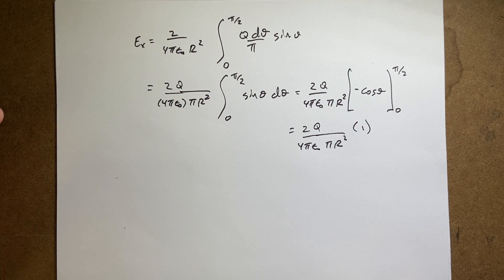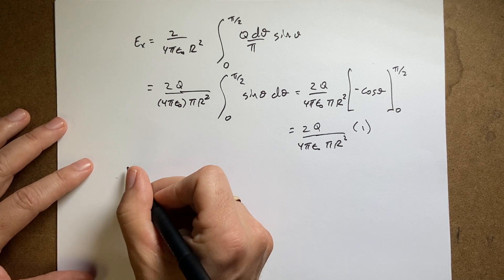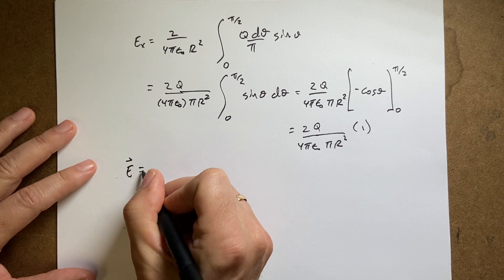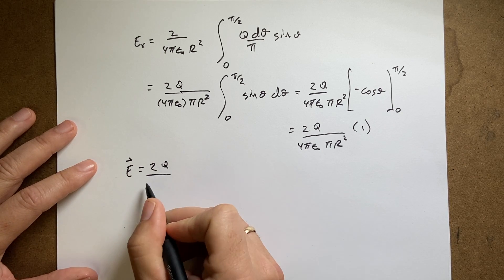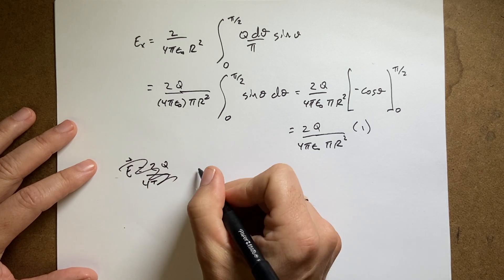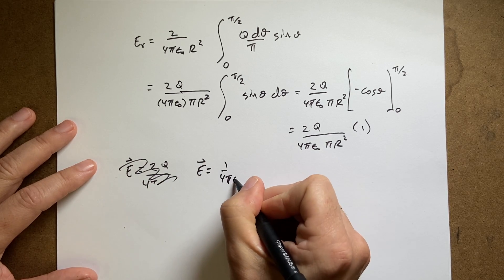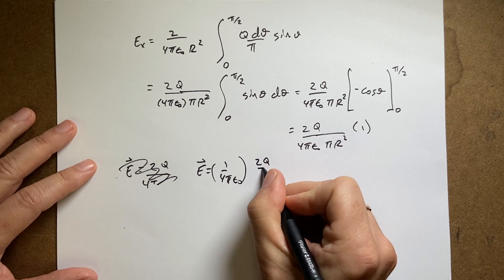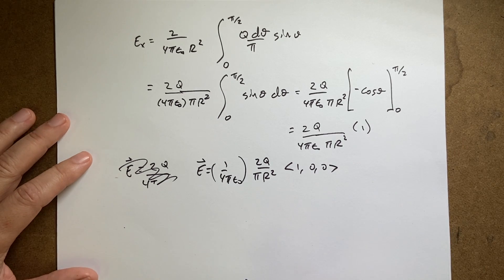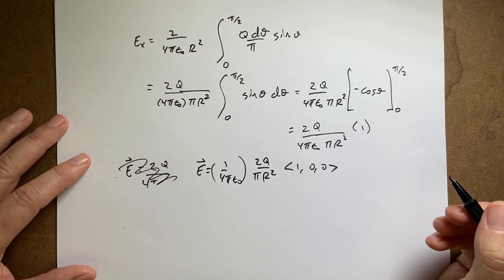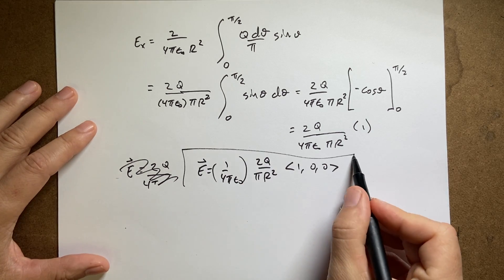Now, if I want to write it as a whole vector, I can just write E equals—I know that there's no y component. So let's put this down: 2q over 4... Actually, I like to write it like this. E equals 1 over 4 pi epsilon naught. That's my constant. And then I have 2q over pi r squared, the vector 1, 0, 0. Or if you want to write this as in terms of x hat, y hat, whatever makes you happy, because it's about you being happy. Okay, but that's the answer.